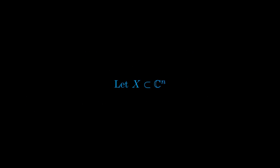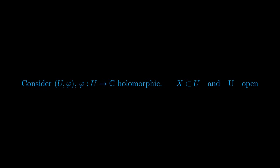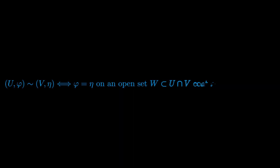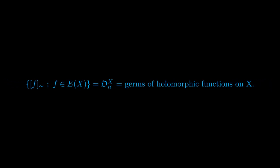Let X be a subset of C^n. We consider the set of pairs (U, f), where U is an open set in C^n containing X and f is a function holomorphic on U. We call this collection of such pairs the set E. We now define a relation on E: two elements (U, φ) and (V, η) of E are equivalent — denoted with tilde — if and only if φ and η agree on an open set containing X. This tilde is an equivalence relation, and the equivalence classes are called germs of holomorphic functions on X.